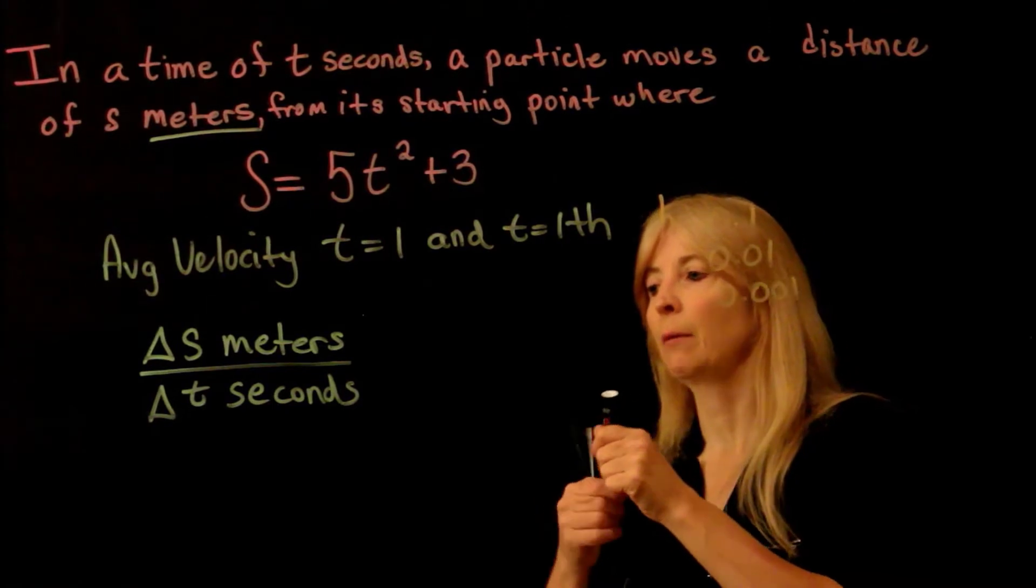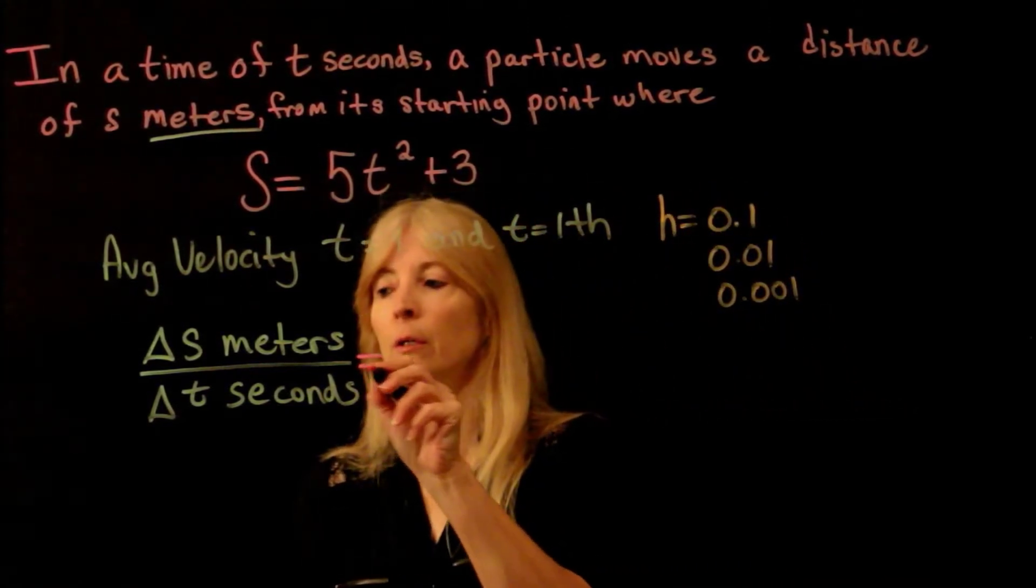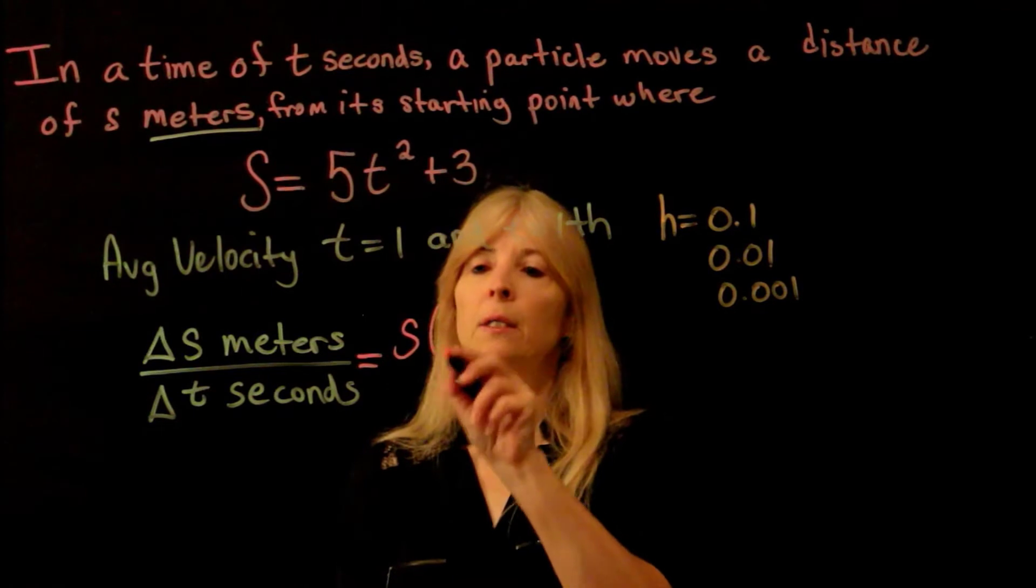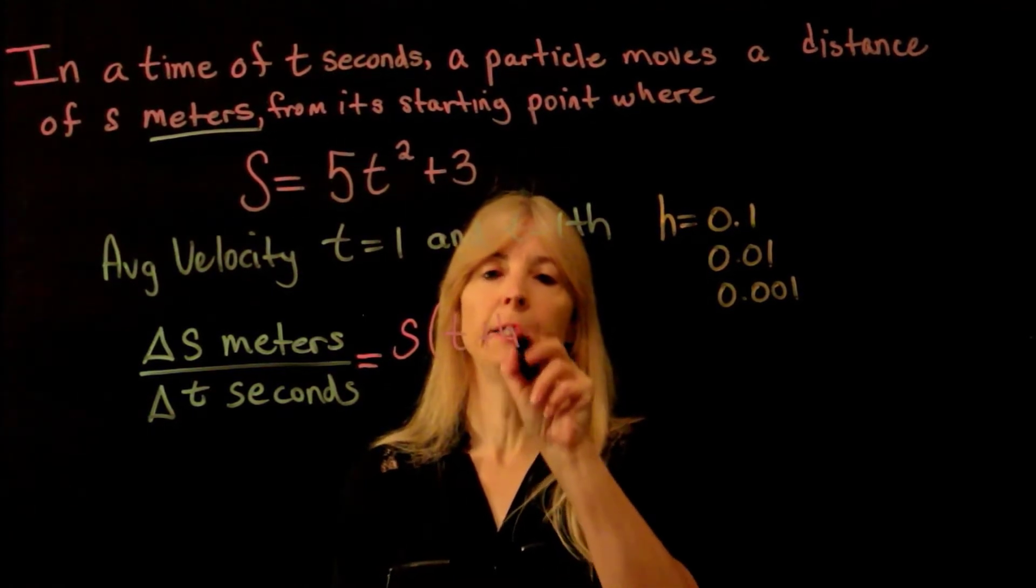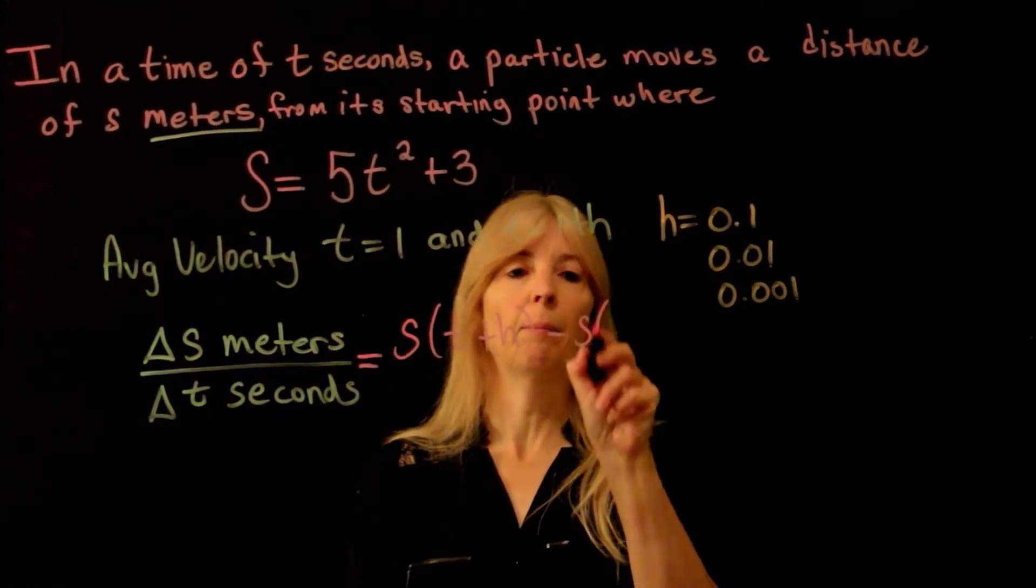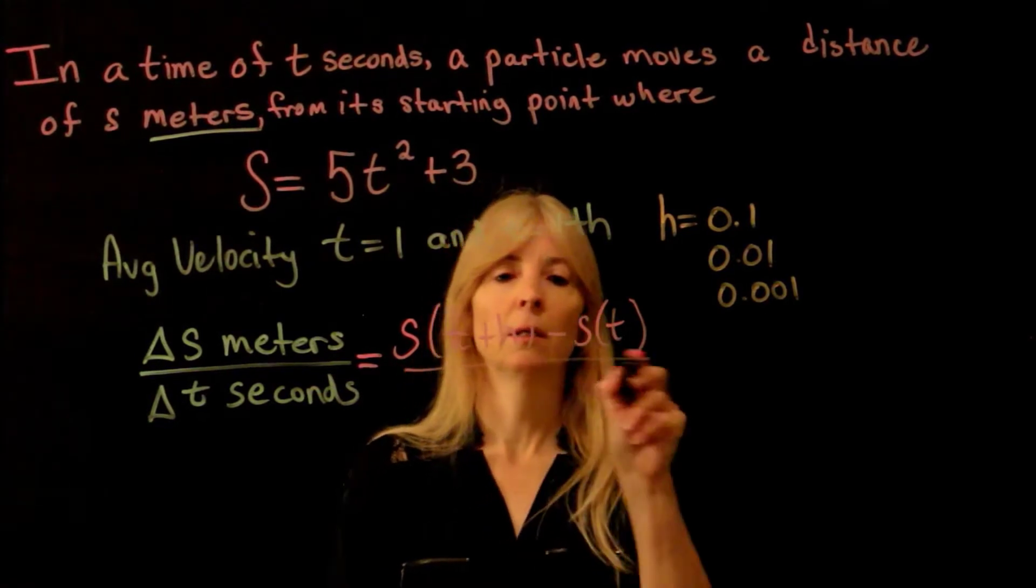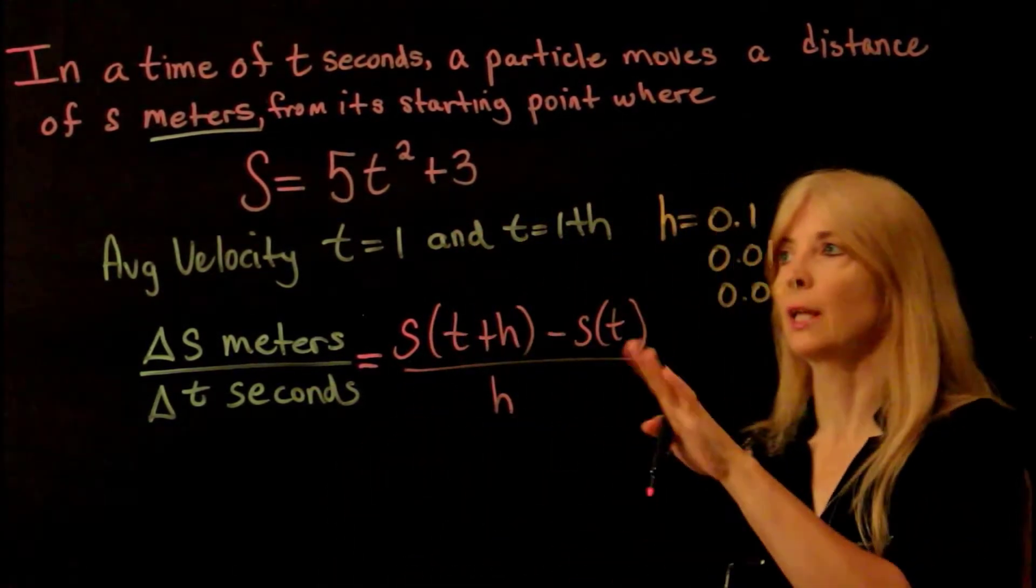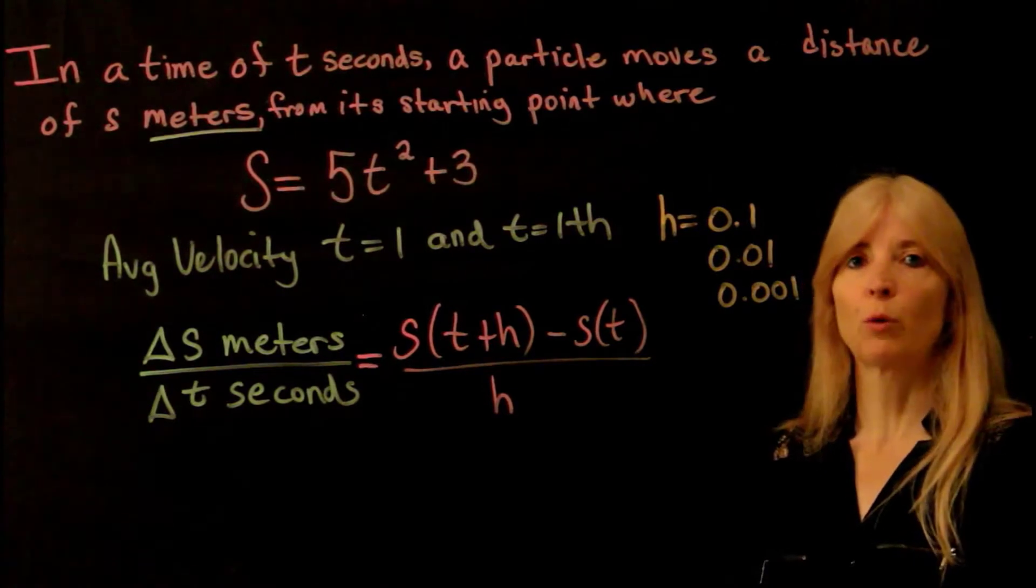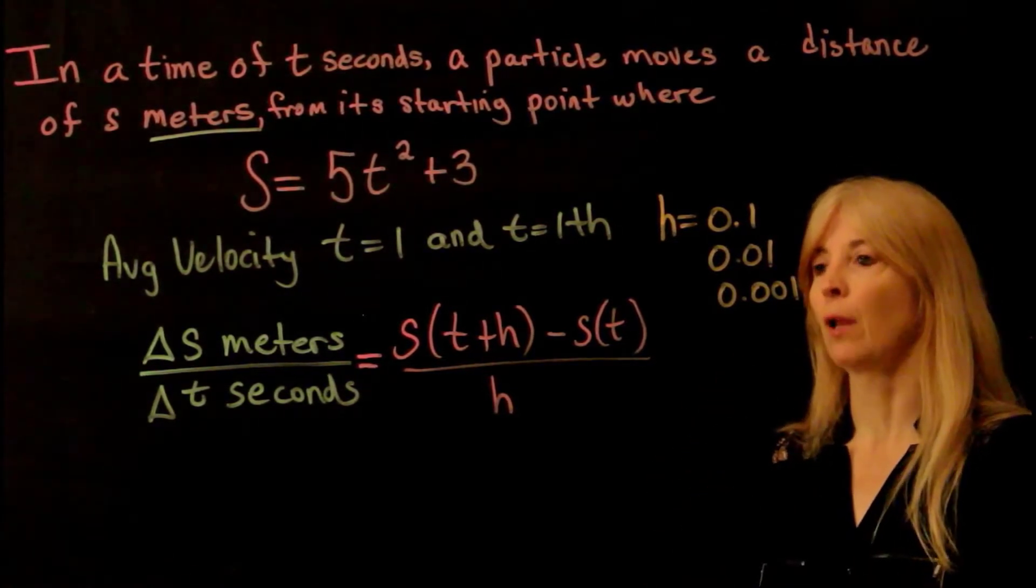Okay, so I take my actual function here, and I plug in t plus h, and then I plug in t all over h. So that's how we rewrote our average rate of change. So I'm finding average velocity.